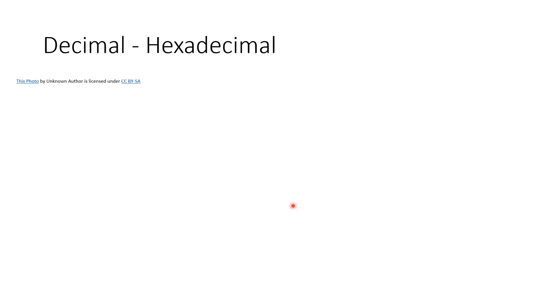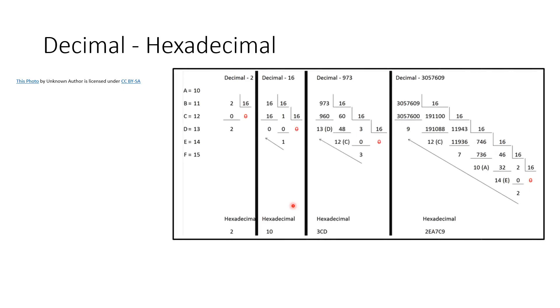We have decimal to hexadecimal conversion. Here on the first picture, it's almost the same as what we were doing with dividing by 2, but in this case we divide by 16. We have to remember that 10 to 15 have letters - capital letters A, B, C, D, E, F for hexadecimal representation.